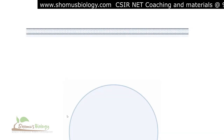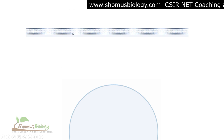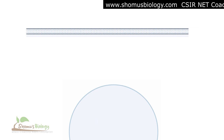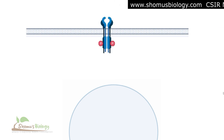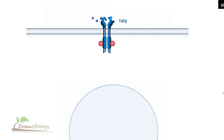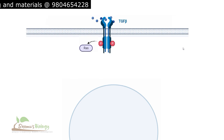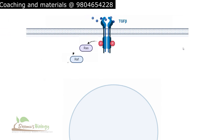For the TGF-beta signaling animation, we start with the cell membrane at the top and the nucleus below. The TGF-beta receptor sits in the membrane. When the TGF-beta signaling molecule binds to the receptor, the receptor gets phosphorylated. The phosphorylated cytosolic side of the TGF-beta receptor then activates a RAS protein in the cell cytosol.